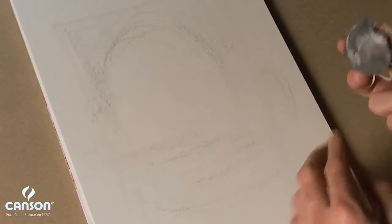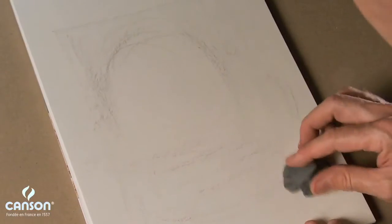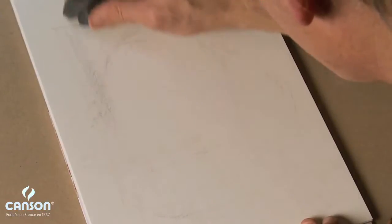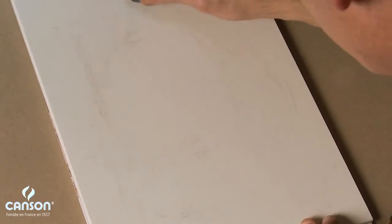So I take my kneaded eraser, I'll flatten out one side of it, make sure we've got a smooth surface without any sharp edges that'll leave streaks. And we'll just lighten the whole drawing until we can just barely see it.